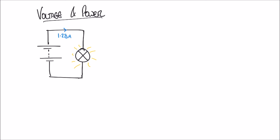We're going to calculate the power dissipated by the bulb. We do this by considering the voltage — let's say it's a 10-volt battery. The formula for power is nice and simple: P = I × V. With a current of 1.28 amps and a voltage of 10 volts, 1.28 times 10 gives us 12.8 watts.